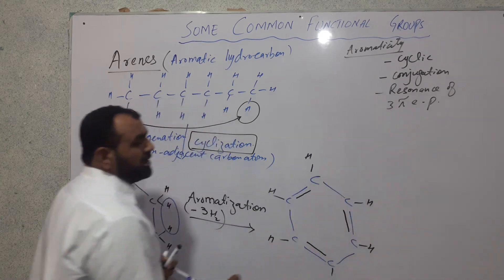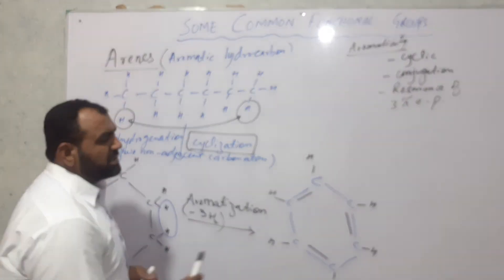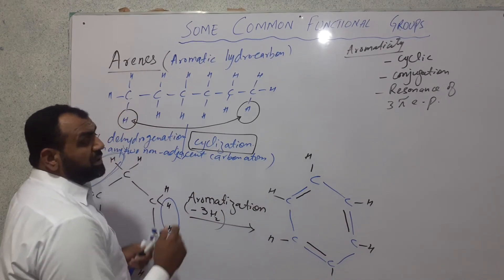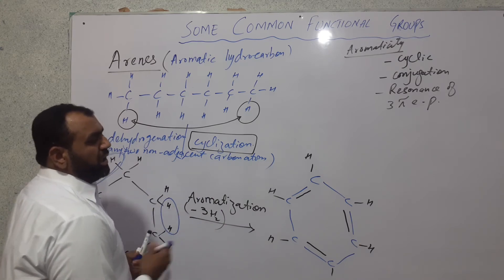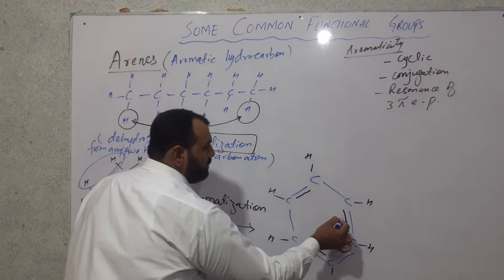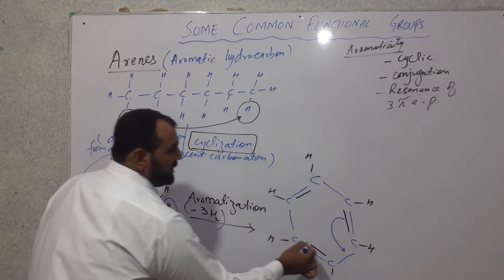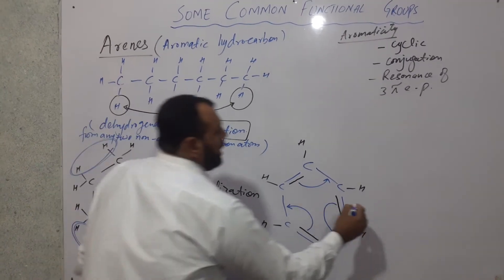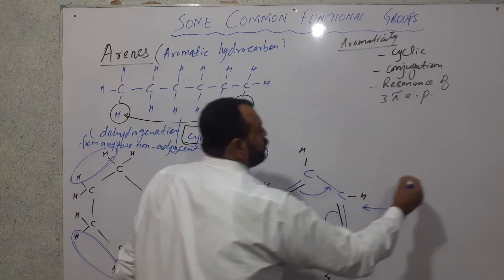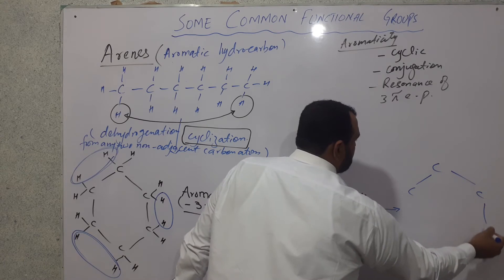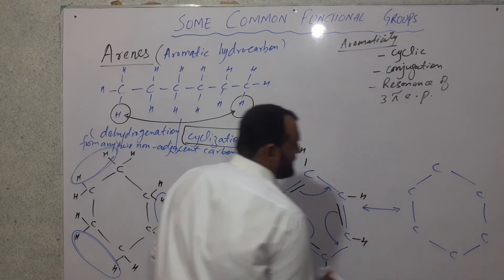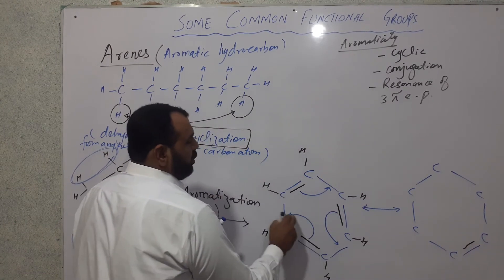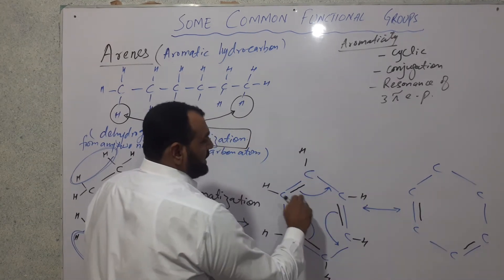The presence of alternate single and double bonds in a compound is termed conjugation. This compound now has conjugation with three pi bonds. When three pi bonds exist in conjugation, they can rotate their positions. If you rotate the first pi bond to a new position, the second pi bond shifts, and the third pi bond shifts as well — giving a similar but shifted structure.